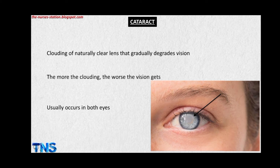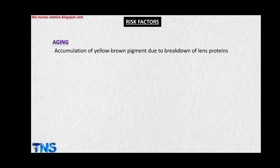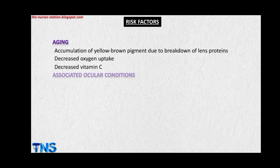It usually occurs in both eyes, but in some cases it may be more in one eye than the other. The risk factors for the development of cataract include aging. With aging, there is accumulation of yellow-brown pigment due to the breakdown of lens proteins, which causes clouding of the lens and decreases the amount of light entering the eye. There is also decreased oxygen uptake, decreased vitamin C, and associated ocular conditions.